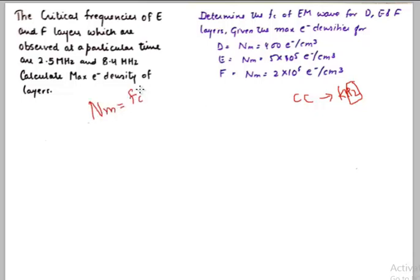Otherwise you need to change it to meter cube, the standard units, if you want the expression to be in volts. So let's see what happens for these kind of numericals. For example in this numerical we see that Nm is equal to f_c² upon 81. So we can clearly say that f_c for E layer is 2.5×10⁶ whole square upon 81.